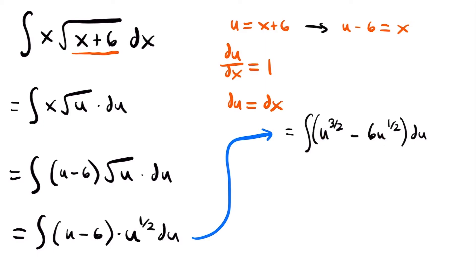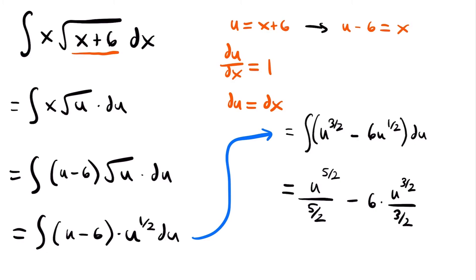Now we have two terms of u that we can integrate using the power rule for integration. The power rule says we add one to our exponent and then divide by that new exponent. So for u to the three-halves, adding one gives five-halves, and we divide by five-halves. Then we subtract the integral of 6 times u to the one-half: adding one gives three-halves, and we divide by three-halves. And of course, don't forget your plus C at the end of every solution for indefinite integrals.